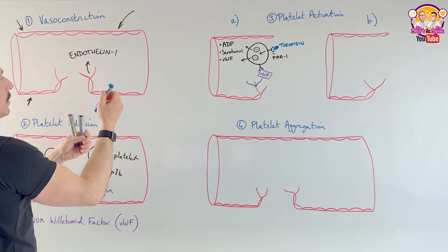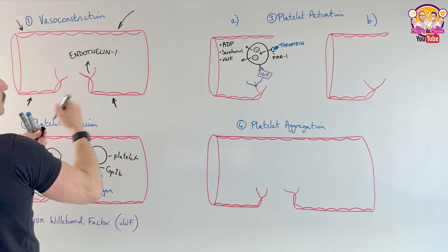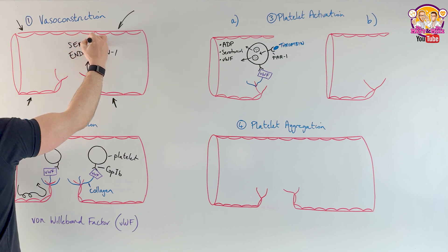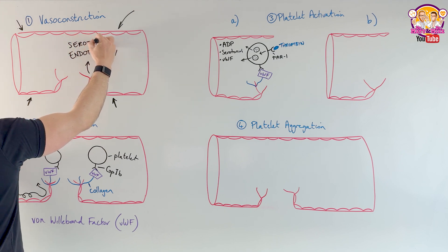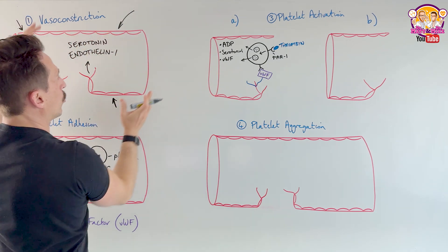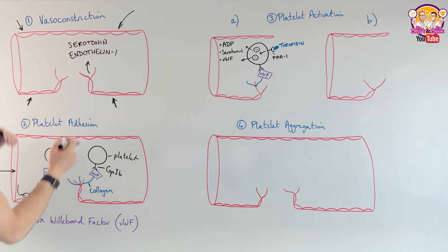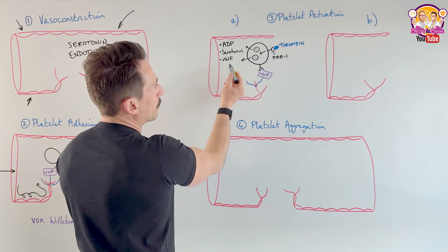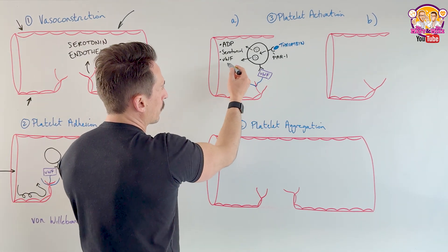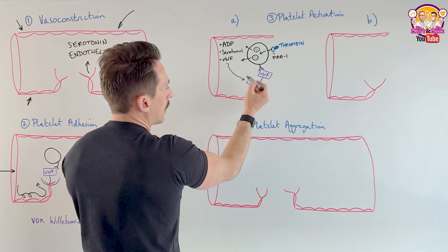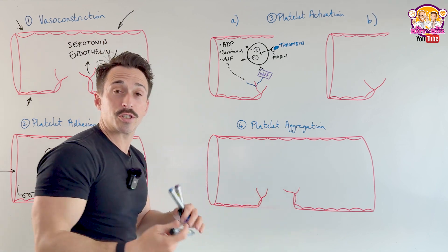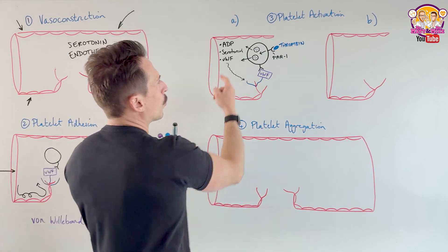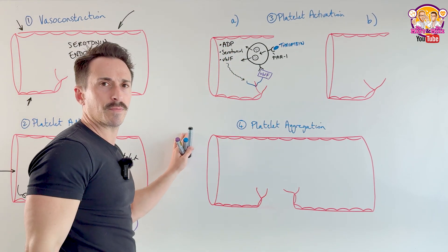Serotonin released from the granules acts as another vasoconstrictor, further helping to constrict the blood vessel. The additional Von Willebrand factor can travel and bind to more collagen, helping more platelets adhere. ADP will then lead us into part B of platelet activation.